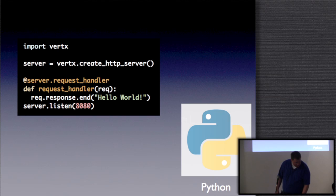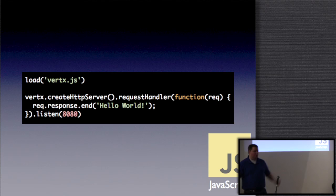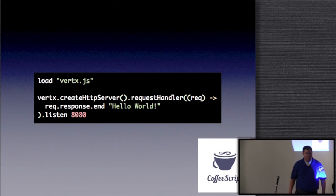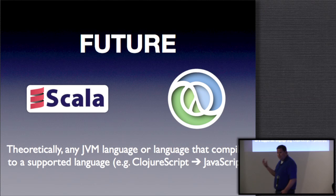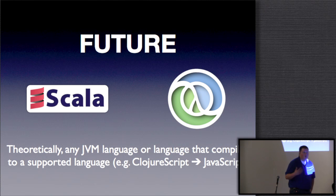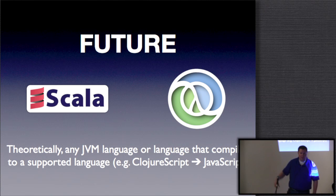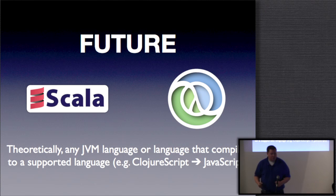We can also do Hello World in Python, JavaScript — where the code looks very familiar to Node developers — and CoffeeScript, which has been added fairly recently. CoffeeScript and Python are the newest kids on the block. In the future there's fledgling Scala support, and some conversations about adding Clojure support. Theoretically any language that runs on the JVM, or any language that compiles down to a supported language, could be used.